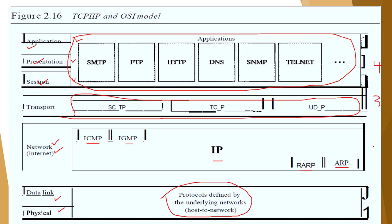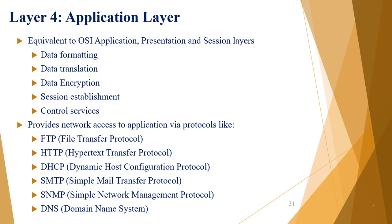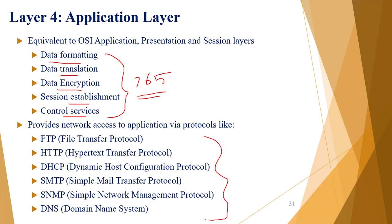The TCP/IP application layer is equivalent to OSI's application, presentation, and session layers combined. Its major functions include data formatting, data translation, data encryption, and session establishment. Protocols in this layer include FTP, HTTP, DHCP, SMTP, SNMP, and DNS — combining all protocols from the three OSI upper layers into one unified application layer.